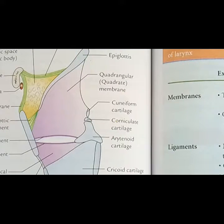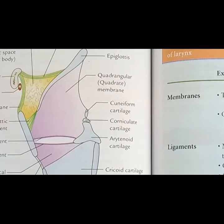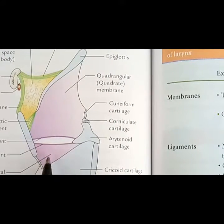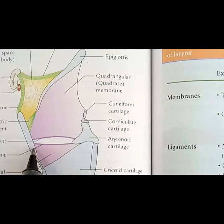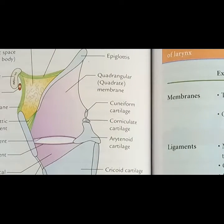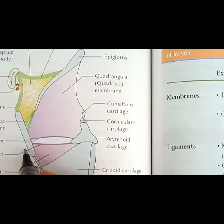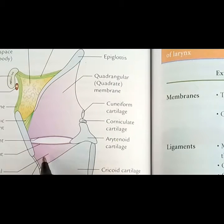The first structure in the intrinsic ligaments and membranes of the larynx is the cricovocal membrane. It extends from the arch of the cricoid cartilage to the posterior surface of the thyroid cartilage and to the vocal process of the arytenoid cartilage. This cricovocal membrane is also called the conus elasticus.